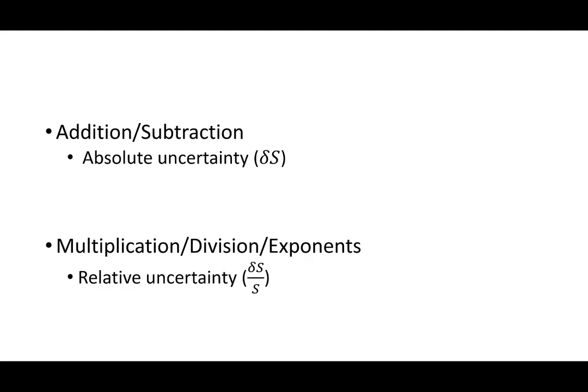The first thing you've got to decide is whether you're dealing with absolute uncertainty, delta S, or the relative uncertainty, delta S over S. And it really depends on which mathematical operation you're doing. If you're doing addition subtraction, you're dealing with absolute uncertainty. And that's the case here because we're adding and subtracting.